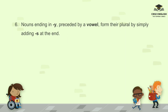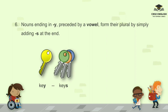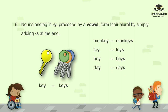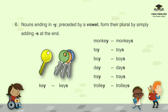Nouns ending in Y preceded by a vowel form their plural by simply adding S at the end. For example: key, keys; monkey, monkeys; toy, toys; boy, boys; day, days; tray, trays; trolley, trolleys; valley, valleys.